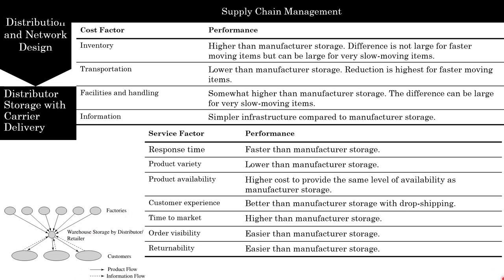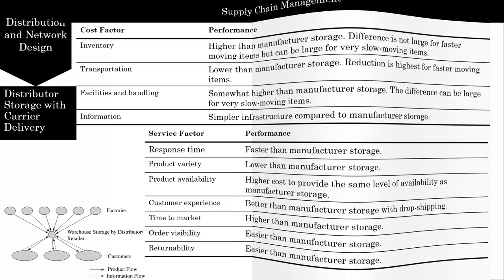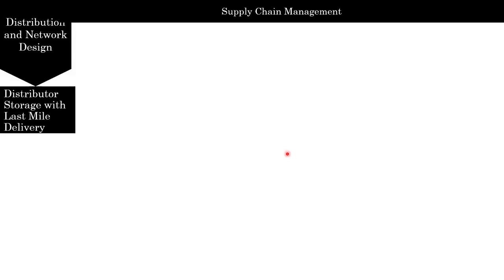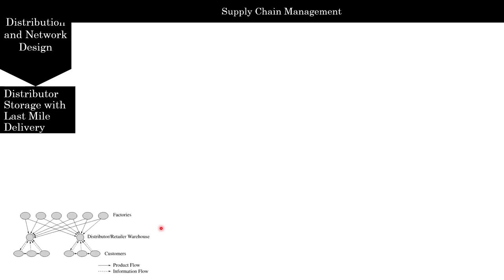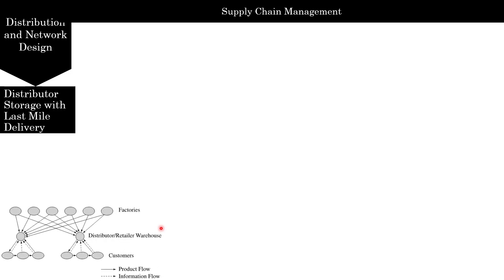The next option is distributor storage with last mile delivery, where last mile delivery refers to the distributor or retailer delivering products to the customer's home rather than using a package carrier. Webvan, Peapod, and Albertsons have used last mile delivery in the grocery industry. Amazon has launched local express delivery to provide same-day delivery to customers. Companies such as Kozmo and Urban Fetch tried to set up home delivery networks for a variety of products but failed to survive.